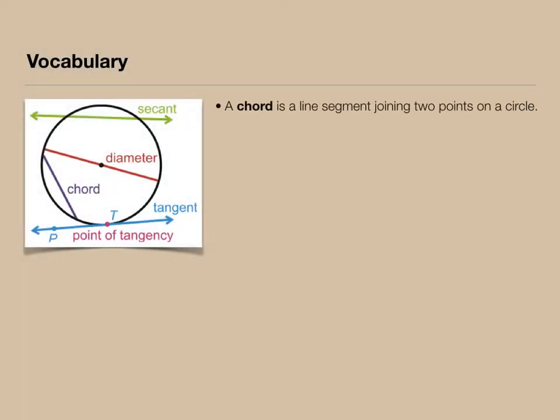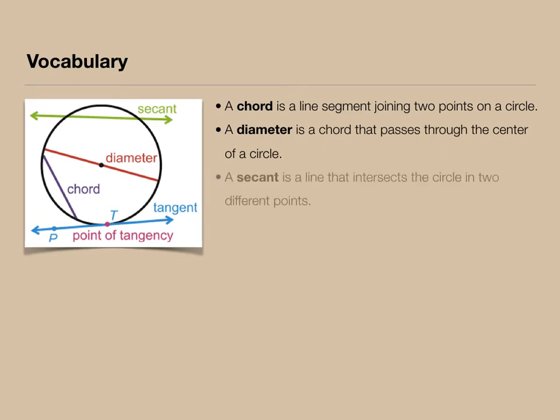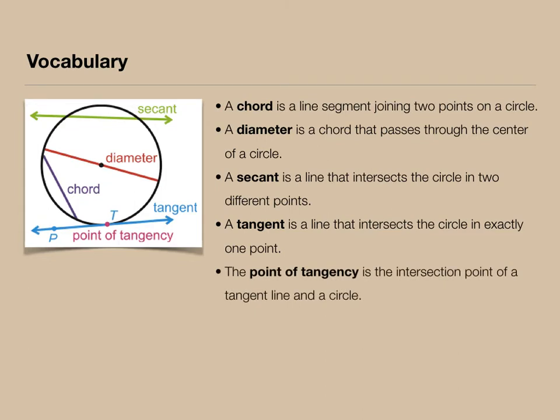A chord is a line segment joining two points on a circle. A diameter is a special chord that passes through the center of a circle. A secant is a line that intersects the circle in two different points. A tangent is a line that intersects the circle in exactly one point, and that point is known as the point of tangency.